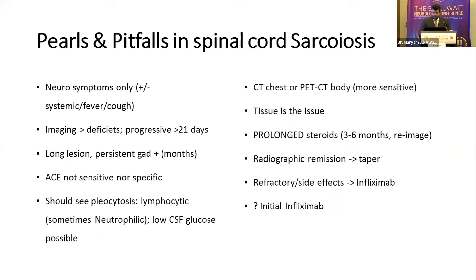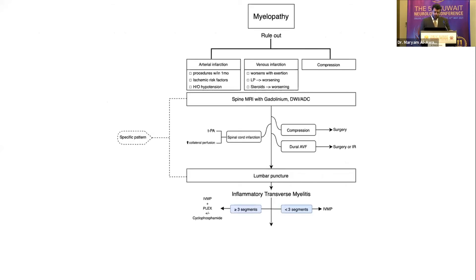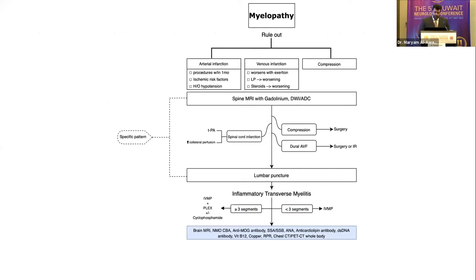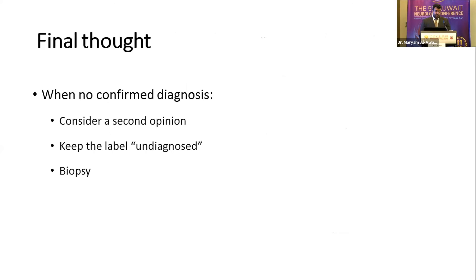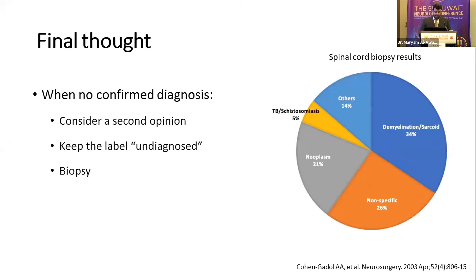When no confirmed diagnosis is reached, strongly consider sending the patient for a second opinion, as myelopathy expertise requires high case volume. Keep the label 'undiagnosed' and allow time for diagnosis to emerge. Biopsy in undiagnosed cases has uncovered findings not detectable by standard methods, including demyelination, sarcoidosis, neoplasia, and infection.